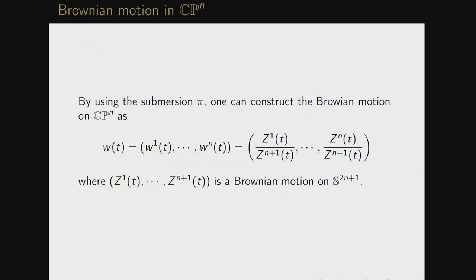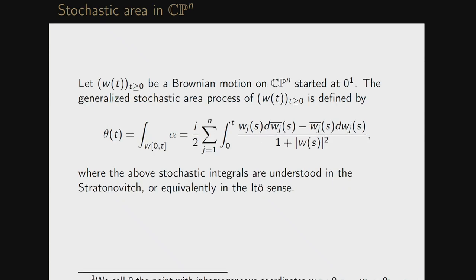This construction starts from Brownian motion on the (2n+1)-dimensional sphere and projects through the Hopf fibration to get a Markov process on CPN, which is associated with the Laplace–Beltrami operator on CPN. Broadly speaking, Brownian motion on a Riemannian manifold is the Markov process associated with the Laplace–Beltrami operator. Since CPN is a Kähler manifold, I can define the area swept out by the Brownian motion up to time t using the canonical Kähler symplectic form.